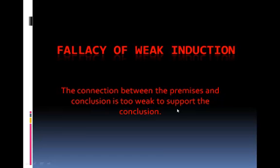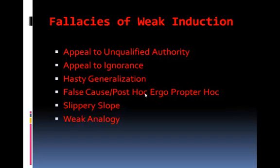The second set of fallacies are called the fallacies of weak induction. These are false inductive arguments because the connection between the premises and the conclusion is too weak to support the conclusion. Examples include the appeal to an unqualified authority, the appeal to ignorance, a hasty generalization, a false cause, a slippery slope, and a weak analogy.